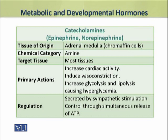The catecholamines also have an important role in metabolism. Epinephrine and norepinephrine are produced by the adrenal medulla, where chromaffin cells produce these hormones. These are amine hormones and they target most tissues of the body. Their primary actions include increasing cardiac activity, inducing vasoconstriction, and increasing glycolysis and lipolysis.